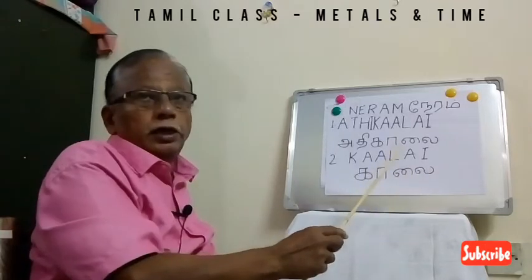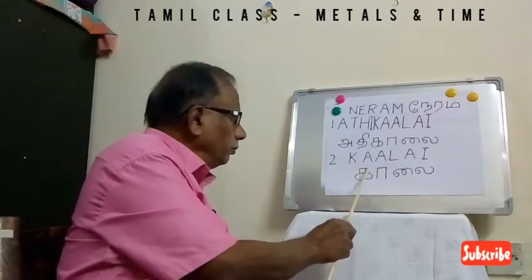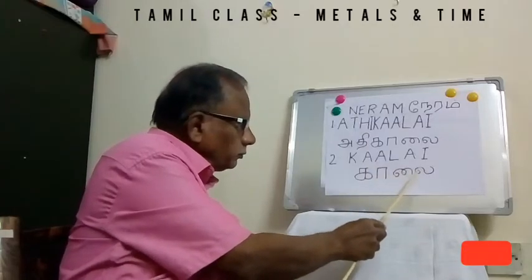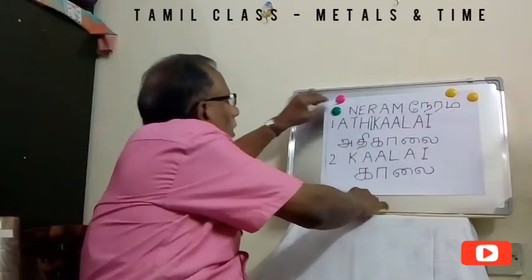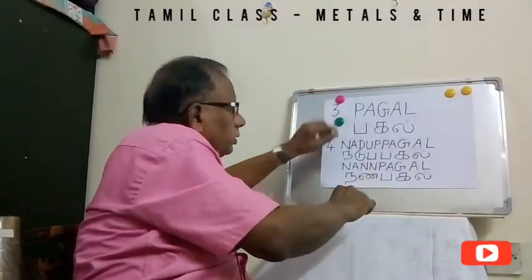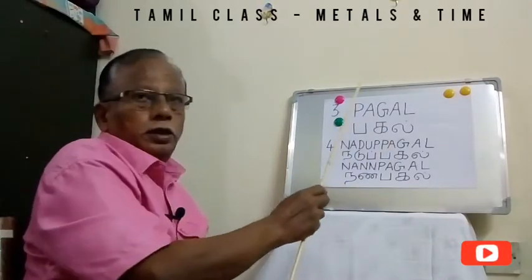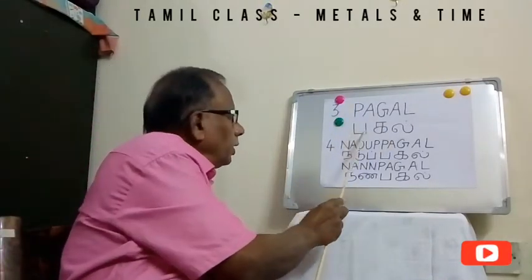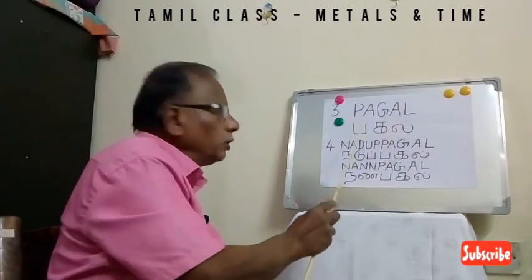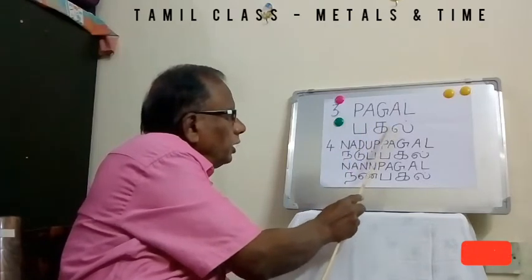Don't say Kale — Kale means it becomes born in Tamil. The correct word is Kaalai — Lai, so it is called Kaalai. The third one is Pagal, which means day. Day is called Pagal — P-A-G-A-L. In Tamil: this is Pa, this is Ka, this is Il — Pagal.